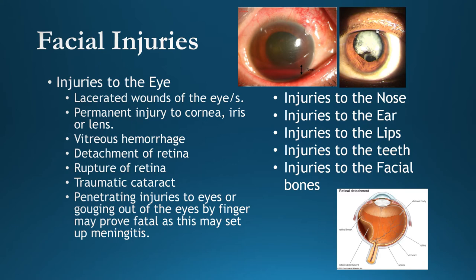Penetrating injuries to the eye or gouging out the eyes can be fatal and may cause meningitis. For nose injuries: the commonest injury is the nose being cut; the left nostril may get injured in Indian females if a nose ring or stud is snatched. Sharp pointed objects cause penetrating wounds. A blow on the nose can compromise the sinuses above, causing leakage. Ear injuries: a blow can cause rupture of the tympanum resulting in permanent deafness, and a severe blow can injure the labyrinth.